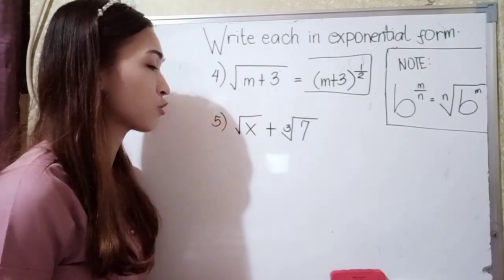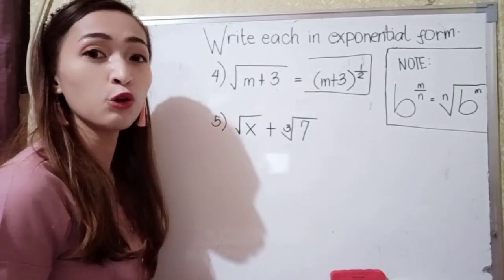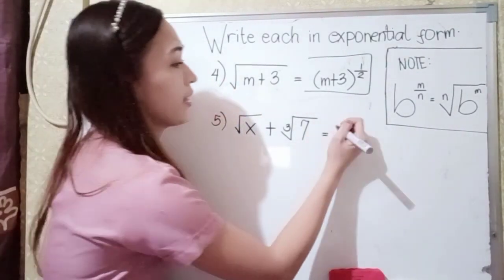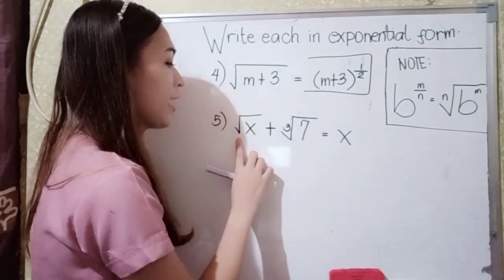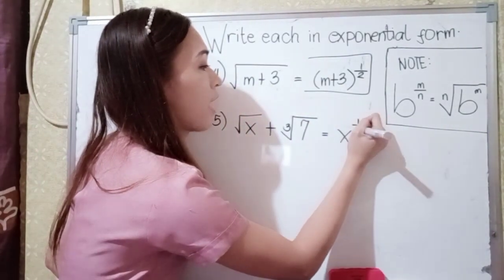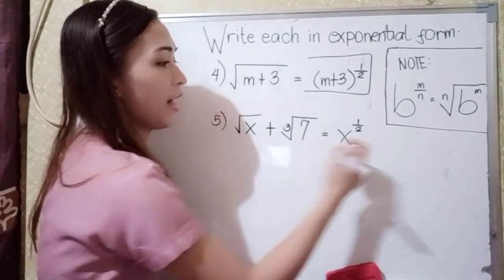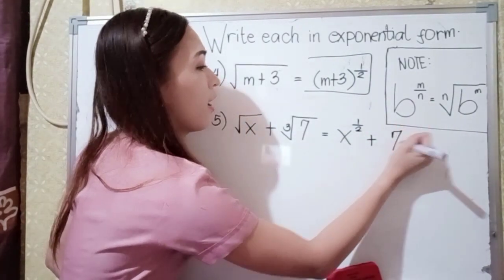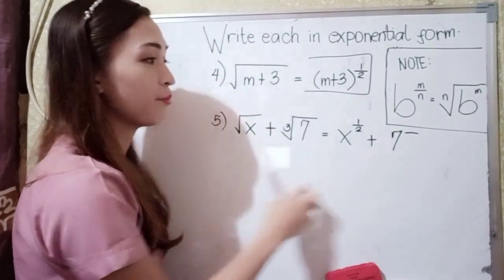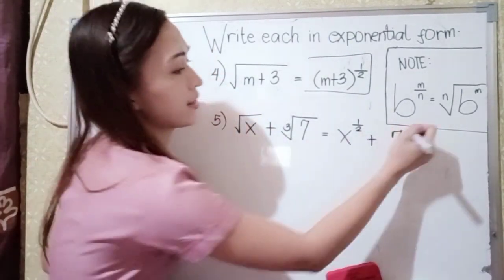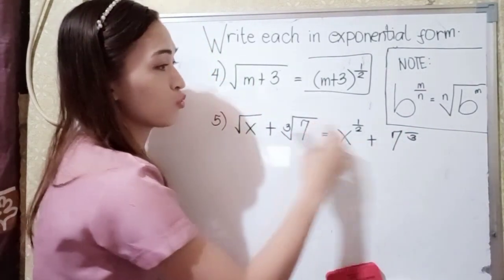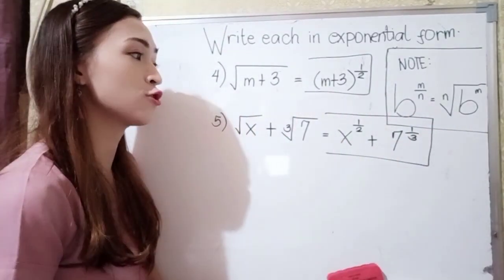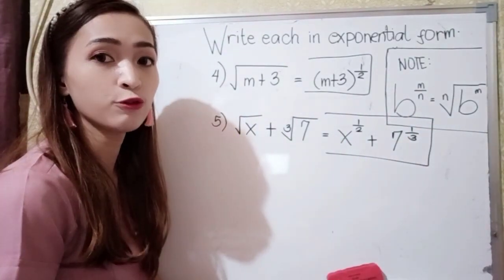For number 5, we have the square root of x plus the cube root of 7. Our base for the first term is x — the square root gives us 1 half. Then we write plus. Our base for the second term is 7, the cube root gives us denominator 3, and the power is 1. So our answer for number 5 is x raised to 1 half plus 7 raised to 1 third.